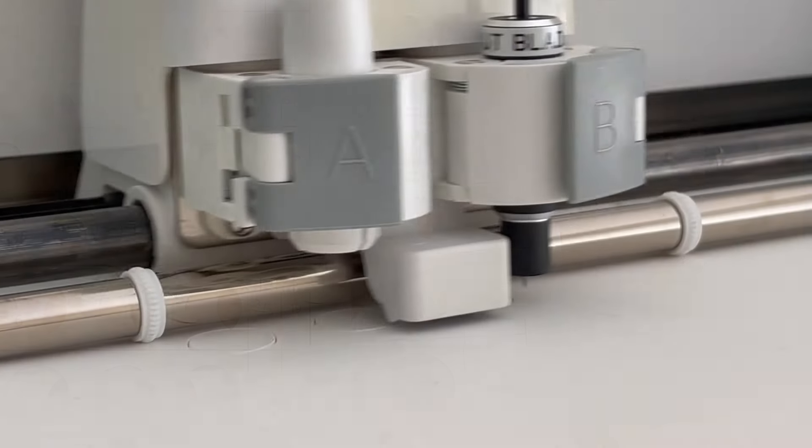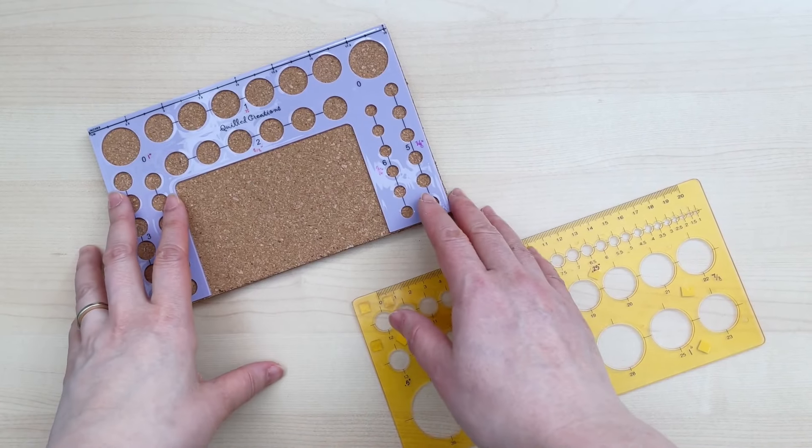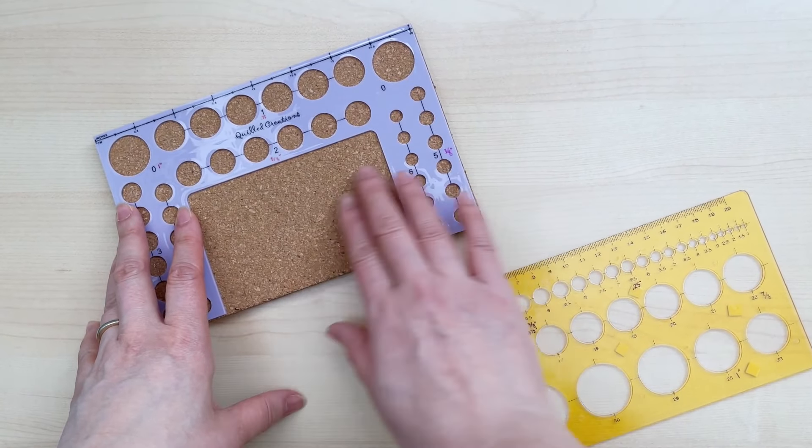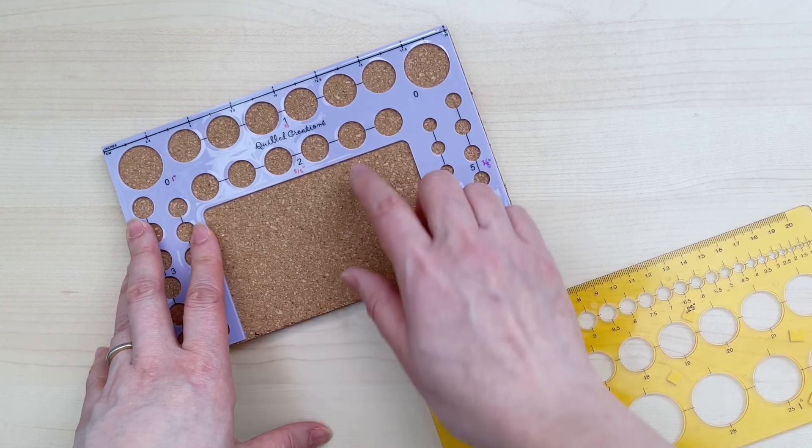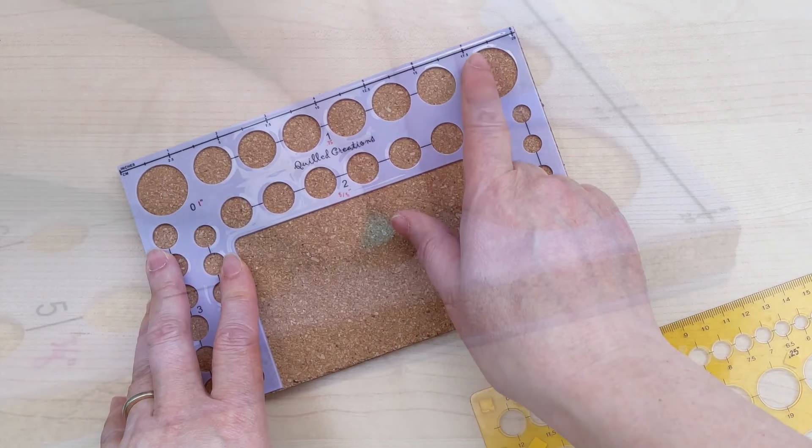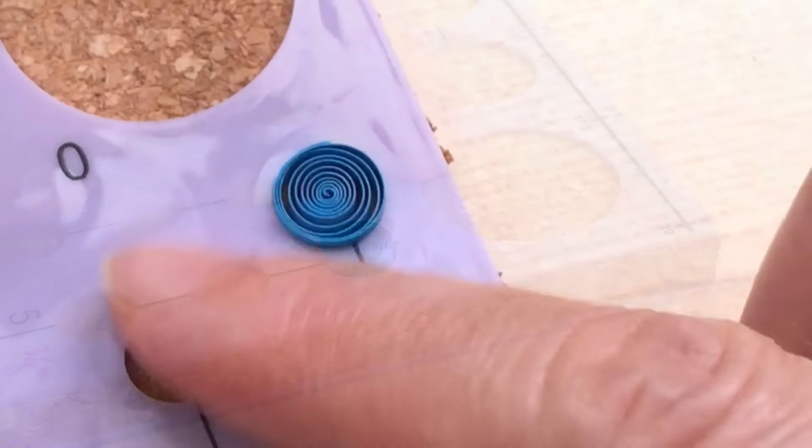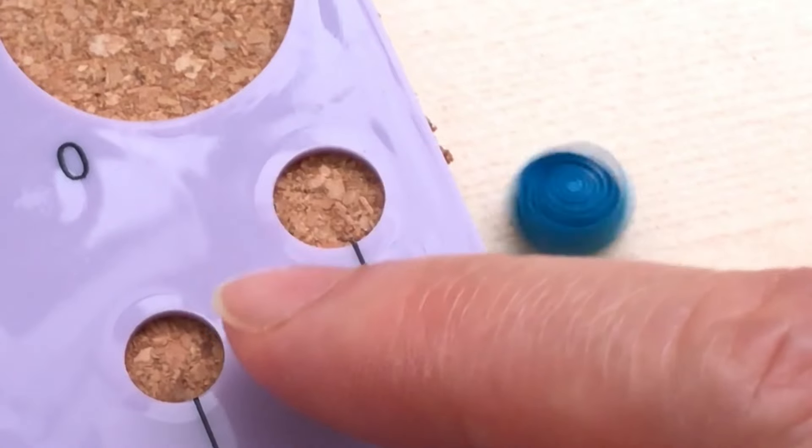Why would anyone go to this extent to cut their own circle template when you can just buy one? This one is from Quilt Creations, and it's nice quality. It comes with a cork board, but it doesn't have a lot of increments in between all the sizes. The plastic layer on top is shallow, so my coils tend to spring out.